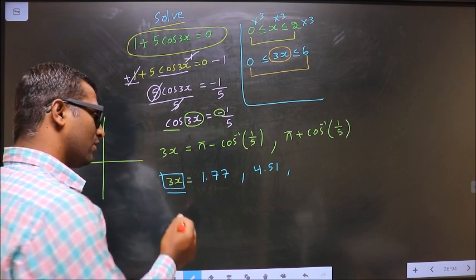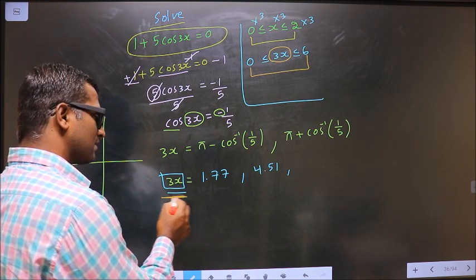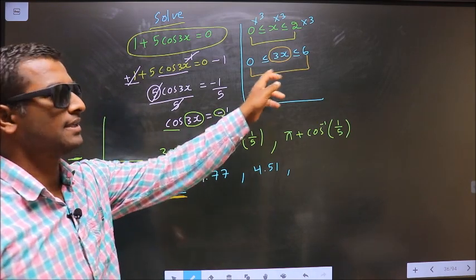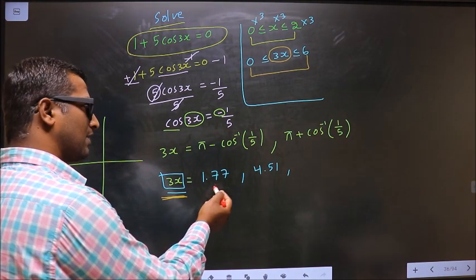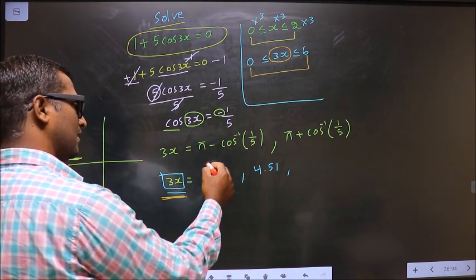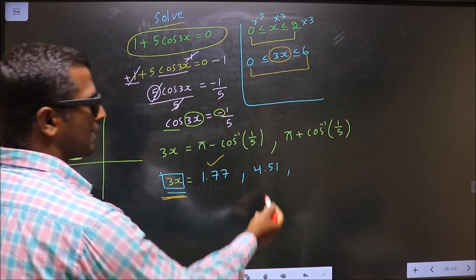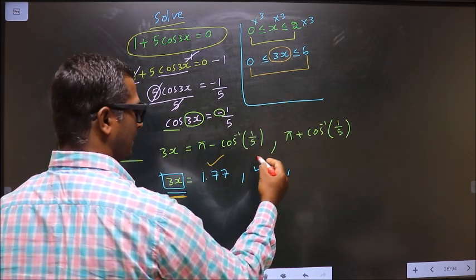Now we should write all the values for 3x lying in this interval. Does 1.77 lie in that interval? Yes, so accept. Does 4.51 lie? Yes, accept.